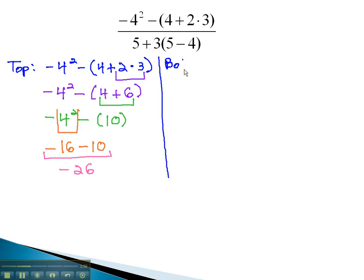Now, we look at the bottom. 5 plus 3, times 5 minus 4. Again, order of operations has us start with the parentheses. We now have 5 plus 3, times 1.